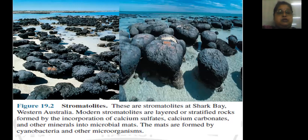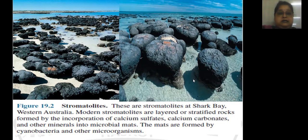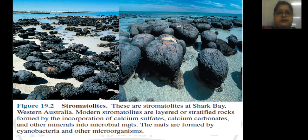Modern stromatolites are found at many places. This picture shows the stromatolite present in the shark bay of western Australia. Chemical analysis shows they are layered stratified rock formed by incorporation of calcium sulfate, calcium carbonate, and other insoluble minerals into the microbial mat, and these are considered proof of early life.